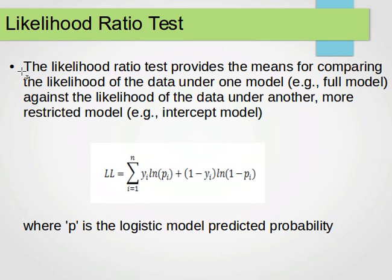Now the likelihood ratio test, what it does, it provides a way for comparing the likelihood of the data under one model, maybe the full model, against the likelihood of the data under another model, maybe a more restricted model, i.e. the intercept model. Here we have the log likelihood equals the sum of yi, natural logarithm of pi, plus one minus yi times natural logarithm of one minus pi. Here is the probability, the logistic model predicted probability. So the probability predicted by the logistic model and y is the outcome or the predicted value. So we have the probability and the predicted value, we sum over all the values and we get the likelihood ratio test.